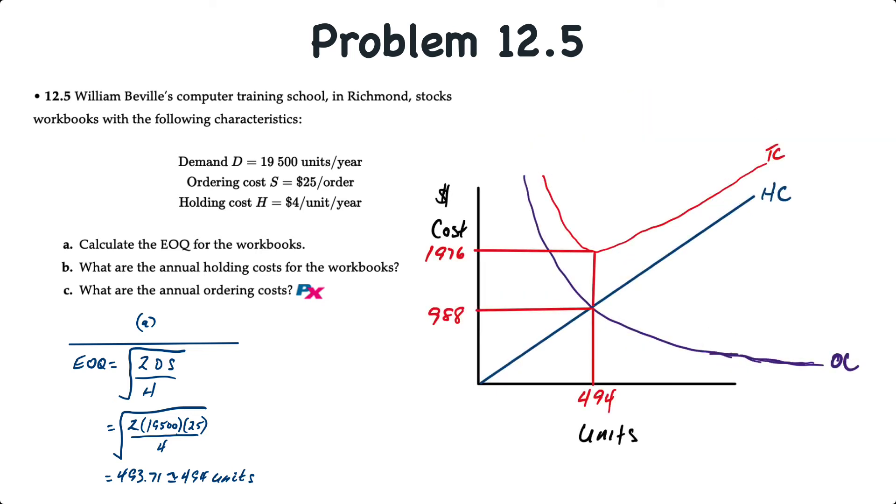If we were to draw this graphically, for economic order quantity, on the x-axis we have units, and the y-axis will have dollar cost. The holding cost is a straight line that starts from the origin, and is upward sloping, whereas the ordering cost is a downward sloping curve. The holding cost is upward sloping and linear, because every unit incurs the same incremental cost. The ordering cost is a downward sloping curve, because the larger the order size, the smaller the ordering cost per unit.